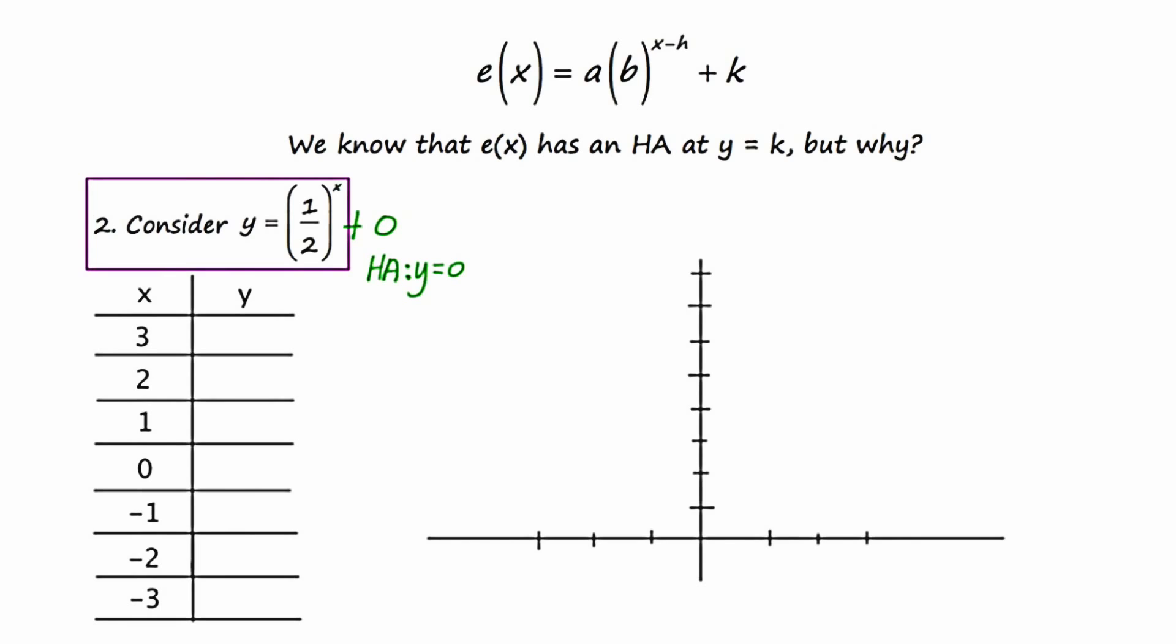And let's see why that is. If I were to plug in or substitute in three for x, I would get one half cubed, which is one eighth. If I were to substitute in two for x, I would get one half squared, which is one fourth. If I were to substitute one in for x, I would get one half. Substituting in zero for x, I would get one half to the zero, and anything to the power of zero is one.